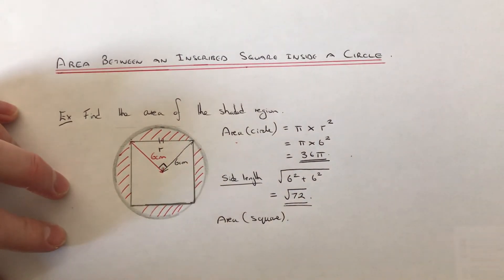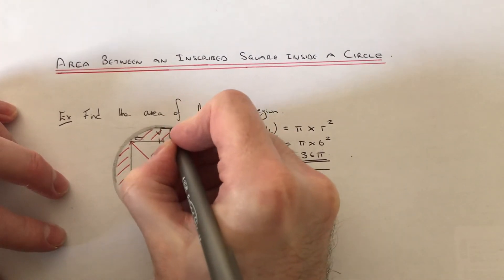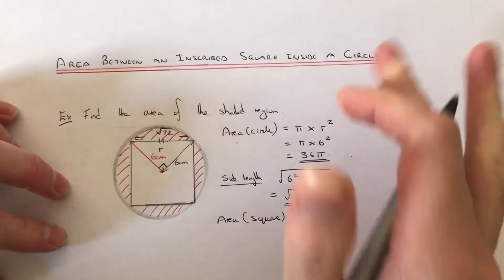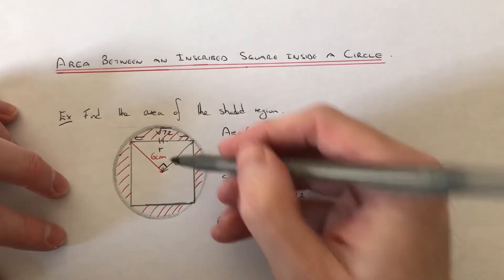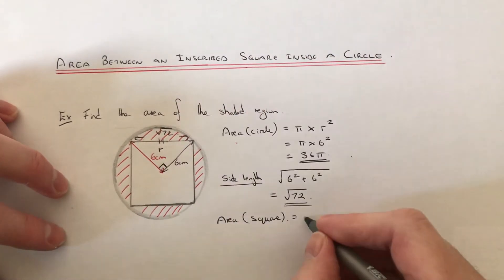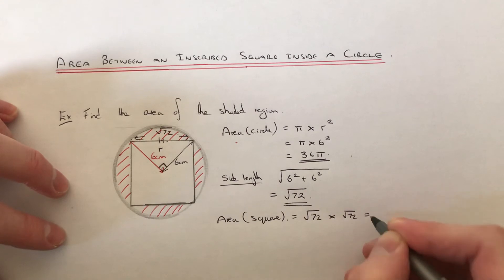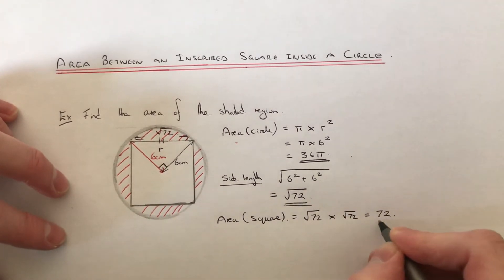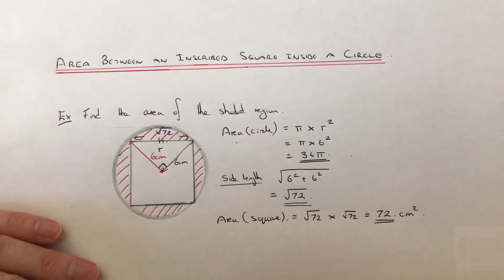We've just worked out that the length of the square is root 72. To find the area of the square, just multiply the two side lengths together. So root 72 times root 72, which gives us an answer of 72 centimeters squared.